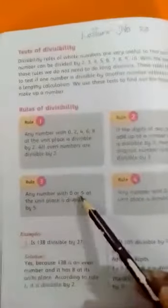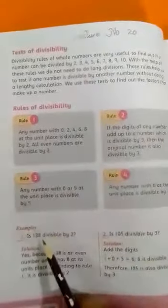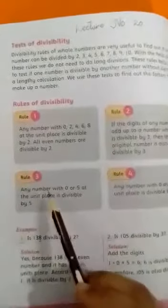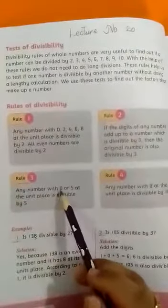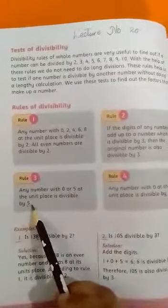Same as Rule 3. Any number with 0 or 5 at the unit place. Unit place means the ones place. If the number at the unit place is 0 or 5, what can it be? It can be easily divided by 5.